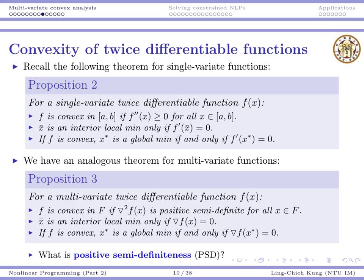A point is an interior local minimum only if the gradient is zero. This is analogous to the single-variable case: when there is only one variable, we need the first-order derivative to be zero; when there are multiple variables, we need all partial derivatives to be zero. Finally, if f is convex, then a point is a global minimum if and only if the gradient is zero. These are similar to the previous conditions for single-variate functions.